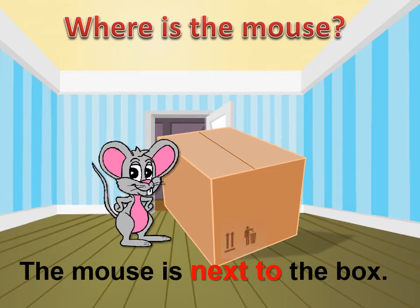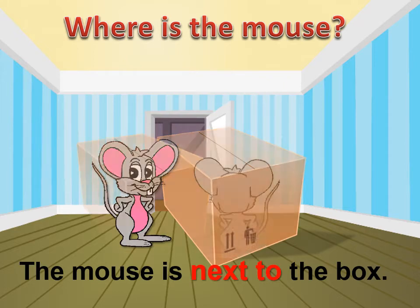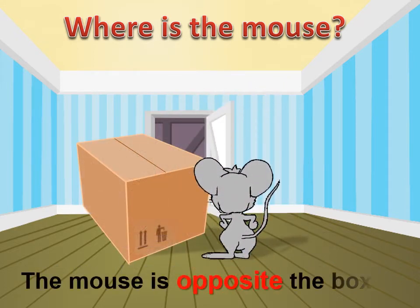Where is the mouse? The mouse is now next to the box. He's next to the box. Where is the mouse? Well, he's opposite the box. Opposite the box.